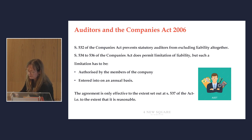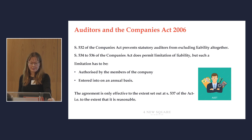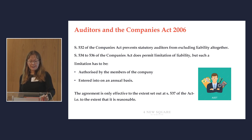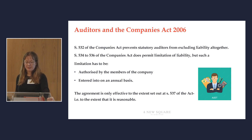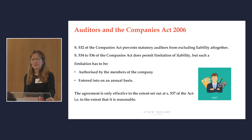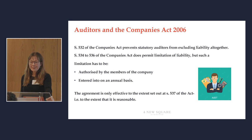I'm now going to pick a couple of examples of the statutory patchwork quilt that applies to various professions. Although auditors are some of the most enthusiastic excluders of liability to third parties, their ability to exclude or limit liability to their own clients in statutory audits is heavily constrained. Section 532 of the Companies Act stops statutory auditors from excluding liability altogether. However they are permitted to limit their liability in some circumstances: the limitation has to be authorised by the members of the company and entered into on an annual basis. That's not going to work in an audit case the way that old languishing terms and conditions would. The agreement is also only effective to the extent that is regarded by the court as reasonable.